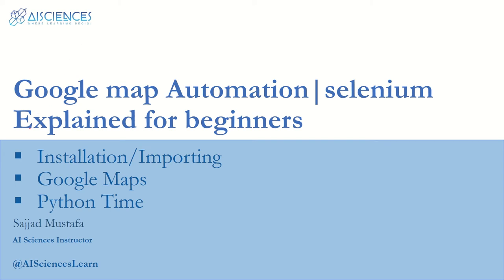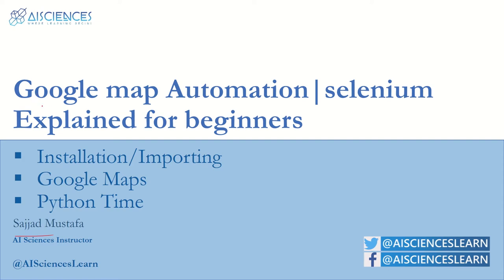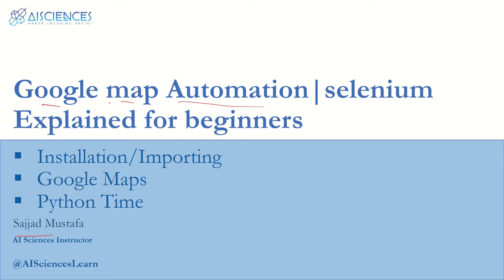Hello guys, welcome to AI Sciences. I am your instructor Sajjad Mustafa and today we are going to talk about Google Map Automation. If you want to integrate your Google Map into any one of your applications using Python, this video will be very helpful. We are going to make use of Selenium in this video and the following is the agenda: we will start with installation of Selenium and then talk about Google Maps, and everything will be done using Python.